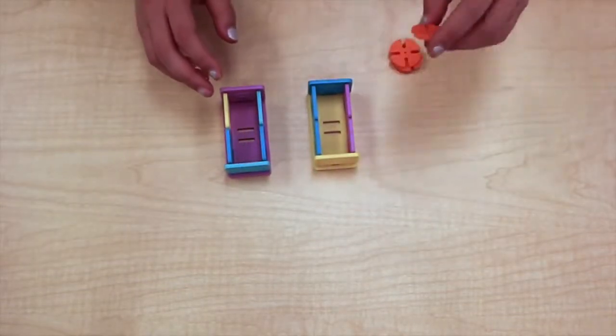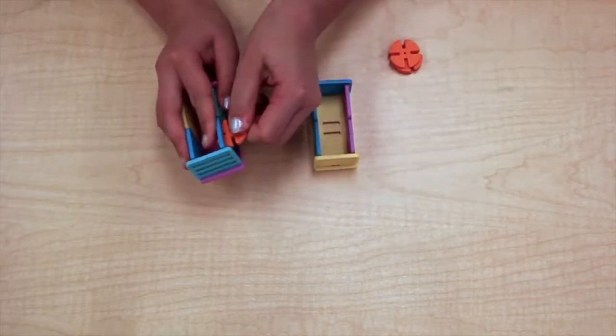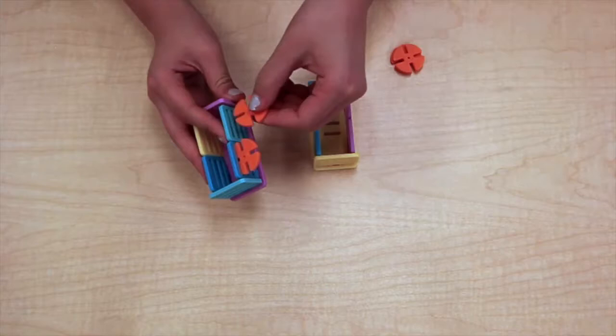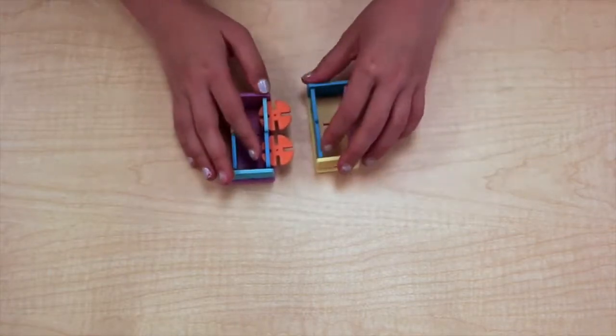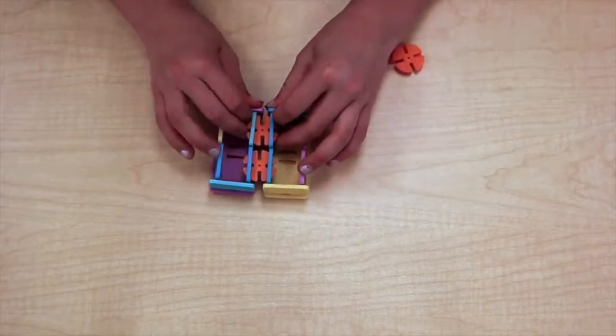Take a connector piece and connect the two boxes together. Insert the connector piece onto the top rung like so and do this to the other side as well. Now slide the two boxes together and there you go, now you have the container part of your basket.